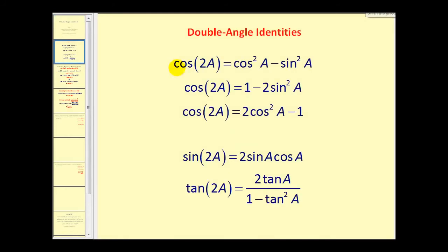There are three double angle identities for cosine. Cosine of two A is equal to cosine squared A minus sine squared A, or one minus two sine squared A, or two cosine squared A minus one. For sine and tangent there is only one double angle identity each: sine two A equals two times sine A times cosine A, and tangent two A equals two times tangent A over one minus tangent squared A.